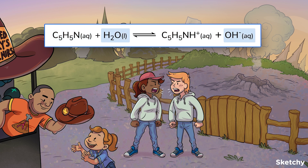Water and hydroxide are also a conjugate pair; in this case water acts as the acid. But depending on the specific reaction, water can also act as a base, in which case hydronium is its conjugate acid.